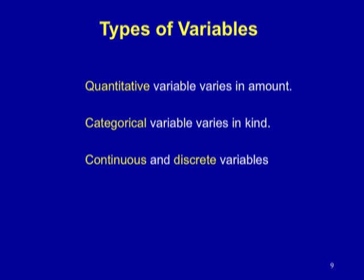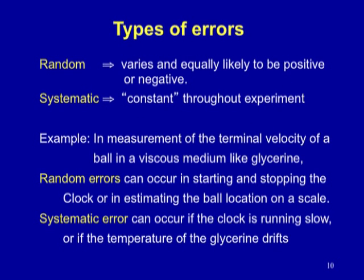Variables can broadly be divided into quantitative — those which vary in amount and can be assigned a number — categorical variables, which vary in kind (for example, gender is a categorical variable), and variables whose value may change discretely or continuously, giving discrete and continuous variables. In any measurement, the goal is to measure the effect and cause accurately, but some sources of inaccuracy will always be present.